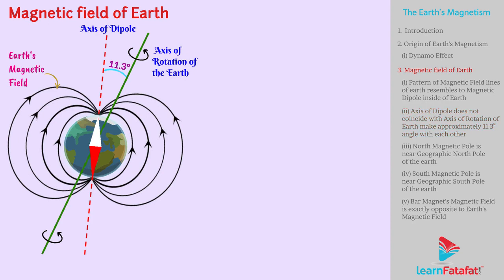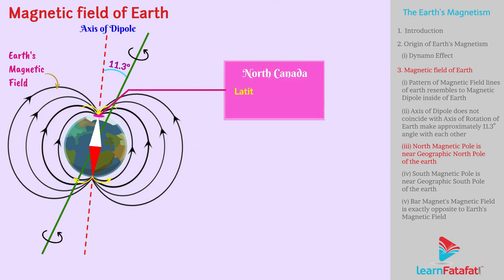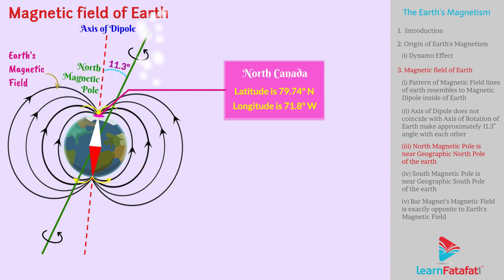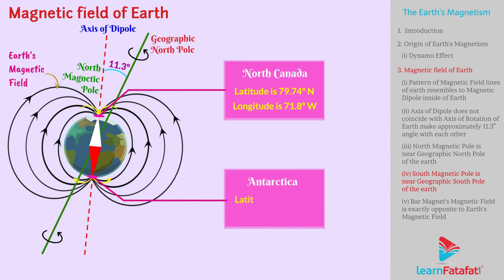The poles of this magnet can be identified where the field lines enter or leave the Earth's surface. A place somewhere in North Canada where the latitude is 79.74 degrees north and longitude is 71.8 degrees west is the North Magnetic Pole — it is near the geographic north pole of Earth's surface. Similarly, a place in Antarctica where the latitude is 79.74 degrees south and longitude is 108.22 degrees east is the South Magnetic Pole, near the geographic south pole of Earth's surface.